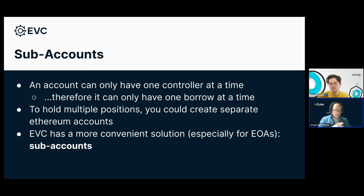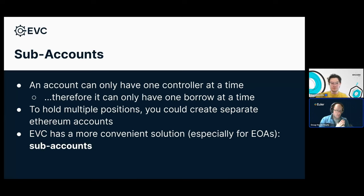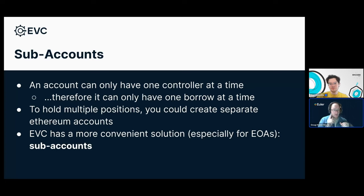Now that the recap is over, let's get into the actual unique features. The first one is a carry-on from Euler V1, where we had a quite similar mechanism. With EOAs — regular Ethereum accounts like your MetaMask account — you don't have as much flexibility to create different positions. At any one given time you can only be associated with one controller in the EVC. You could temporarily have two at once in the middle of a transaction, but by the end you need to have solved it. So by and large, each account can only have one controller at a time, meaning you can only have one borrow at a time.